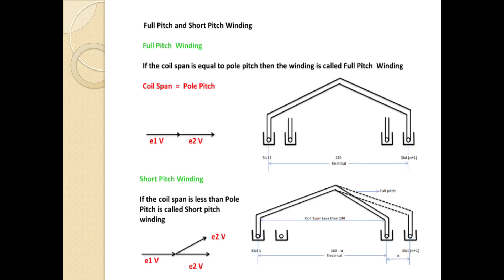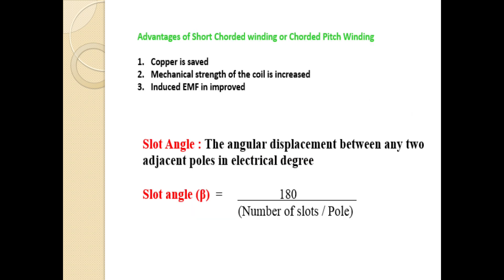Full pitch winding: if the coil span is equal to the pole pitch, the winding is called full pitch winding, where coil span equals pole pitch (E1V = E2V). Short pitch winding: if the coil span is less than the pole pitch, it is called short pitch winding. Advantages of short pitch winding include: copper is saved, mechanical strength of the coil is increased, and induced EMF is improved.